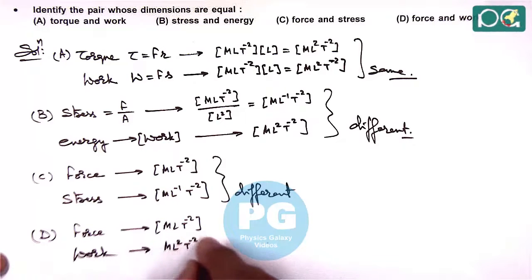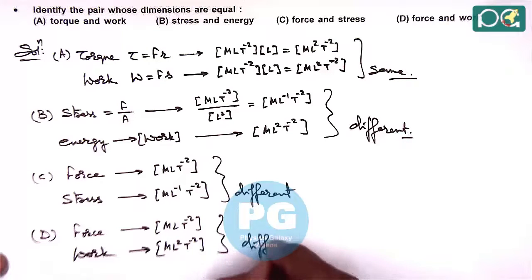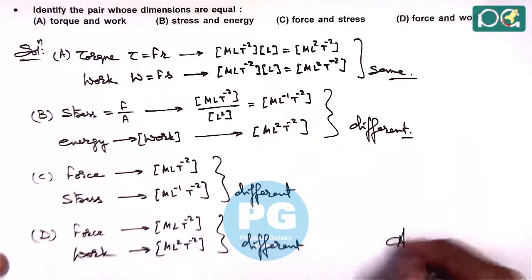And work is M L 2 T minus 2, so this is also different. So here only in option A the dimensions are same.